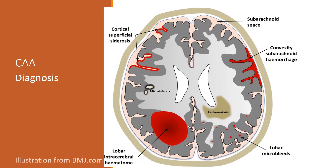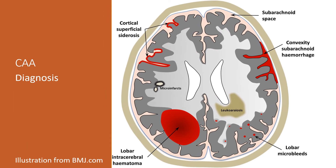Let's look at this diagram. In the upper left corner is cortical superficial siderosis, meaning old deposit of iron. In the upper right corner, there may be a small subarachnoid hemorrhage. In the lower left corner, a patient may have a larger lobar intracerebral hemorrhage. In the lower right corner, it shows possible old small bleedings. These small bleedings can occur in any combination, and that would help us make a diagnosis of CAA.